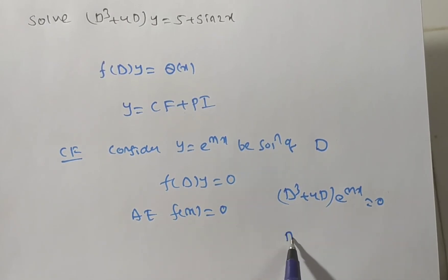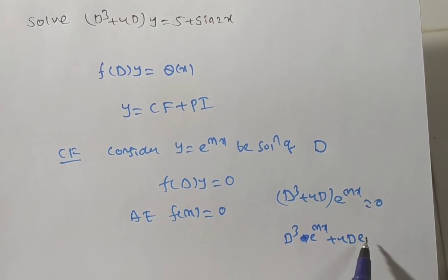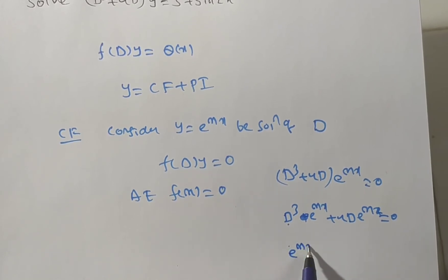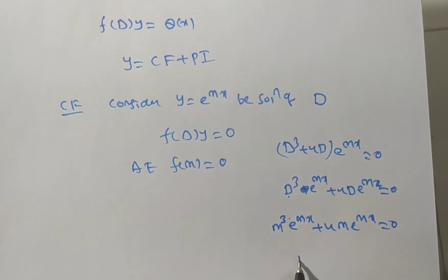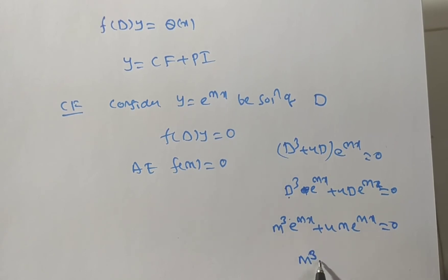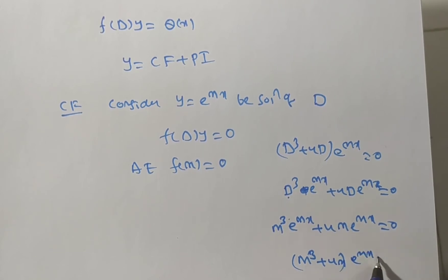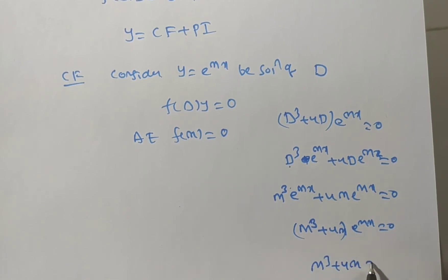We have D³·e^(mx) + 4D·e^(mx) = 0. Differentiating e^(mx) three times: first derivative gives m·e^(mx), second gives m²·e^(mx), third gives m³·e^(mx). So we get (m³ + 4m)·e^(mx) = 0.